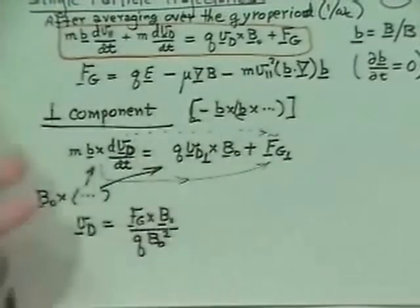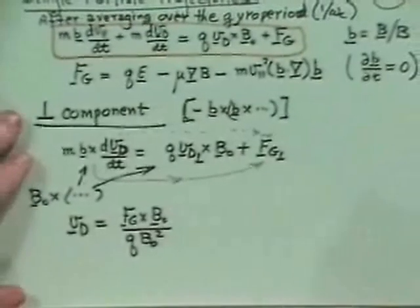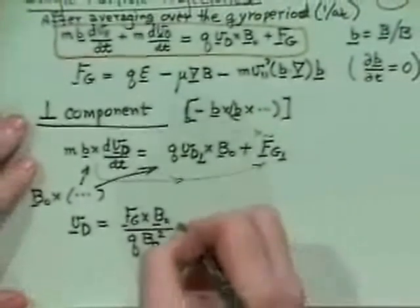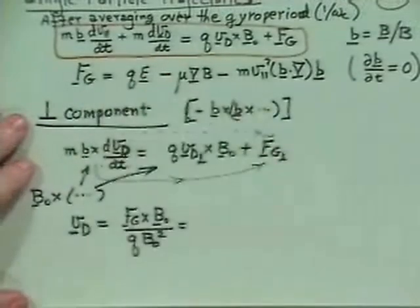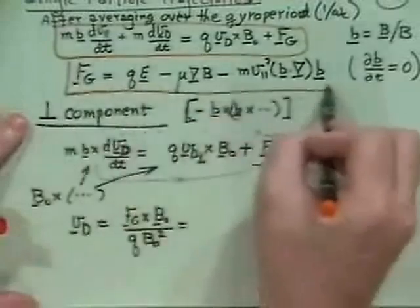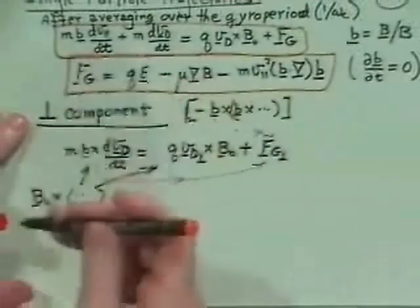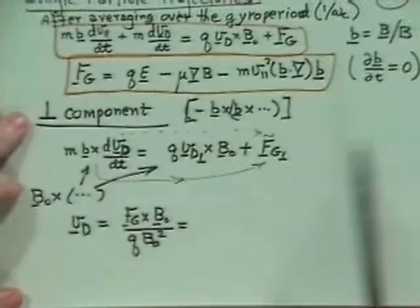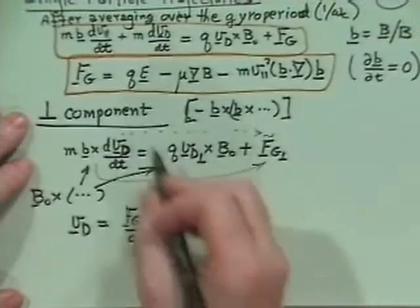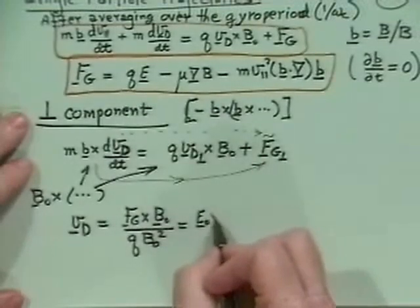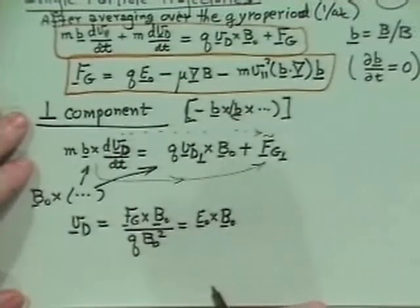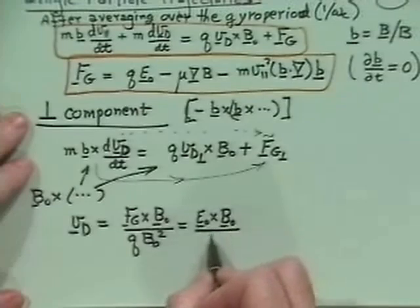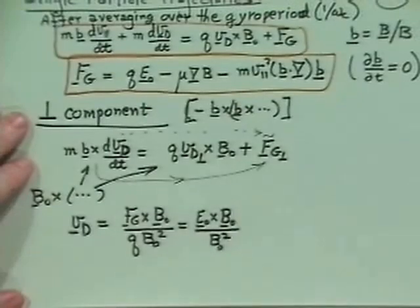The answer is that the force on the guiding center has this electric field force, and so we're going to get our standard — with a q in front — E₀ cross B₀ (that just means at the guiding center), divided by B₀². So that's our standard E×B drift.